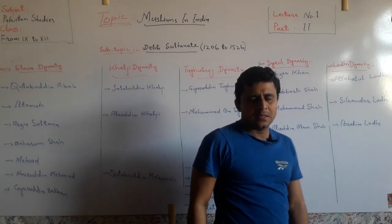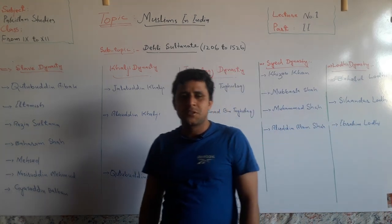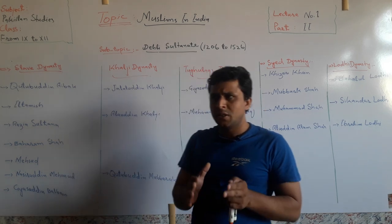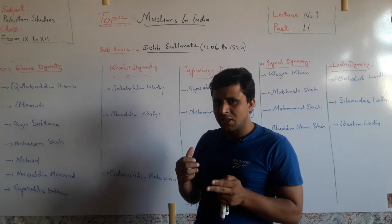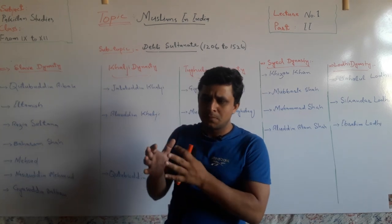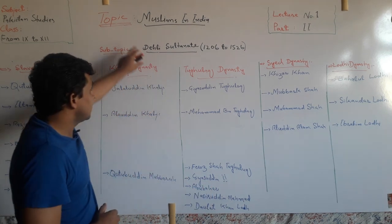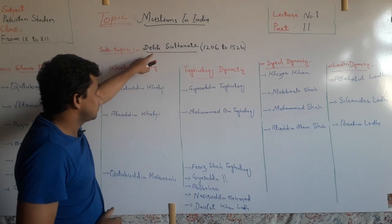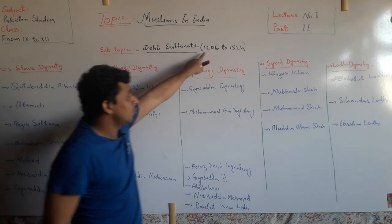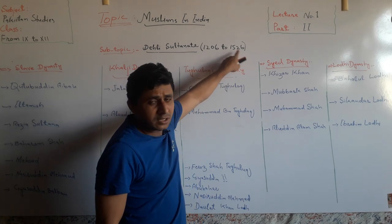Assalamu alaikum dear friends, this is Sajid Ali. In my first lecture I discussed Muslims in India — that was part one, where we discussed Arab conquests, Mahmud Gaznavi, and Muhammad Gori. This is the second part of that lecture. In this lecture we are going to discuss the Delhi Sultanate from 1200 to 1526.